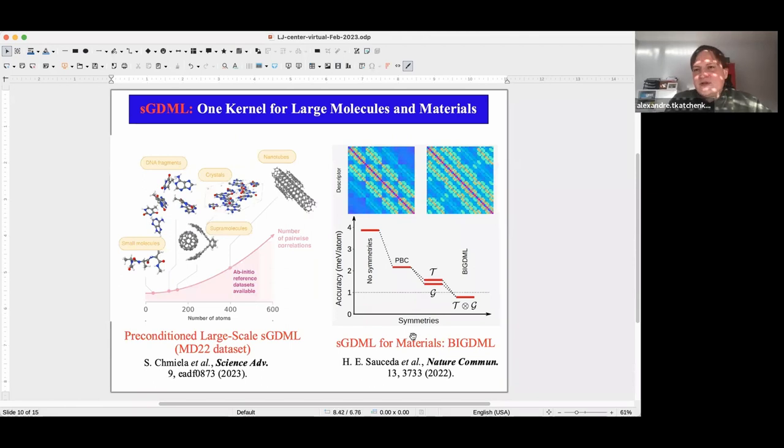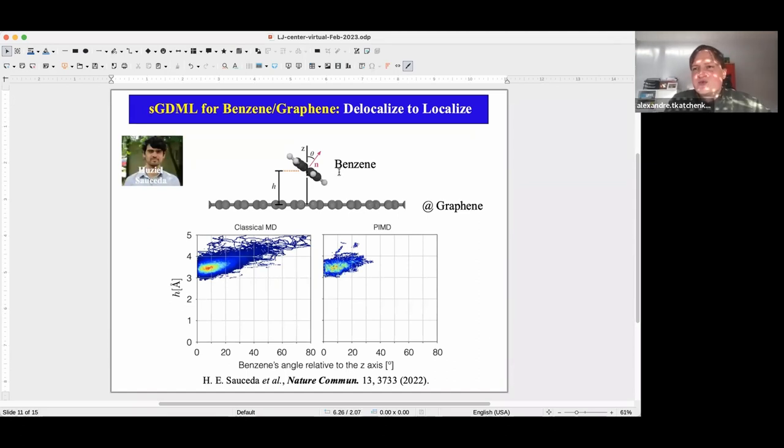We've also extended GDML for materials. So we can, by including all symmetries, so the periodic boundary conditions, the, you know, all the translational and rotational symmetries in the crystal. And by doing so, we can model two-dimensional materials, diffusion of atoms in solids. And so just an example of an application we can do, which leads to very surprising physical results. So this is dynamics of benzene molecule on top of periodic graphene. So this is a fully periodic calculation, a four-by-four graphene unit cell.